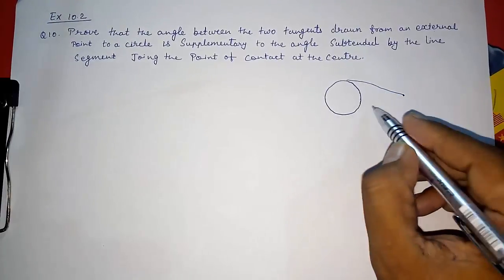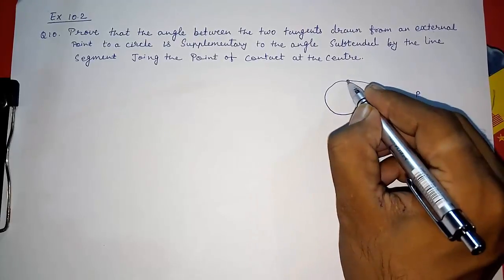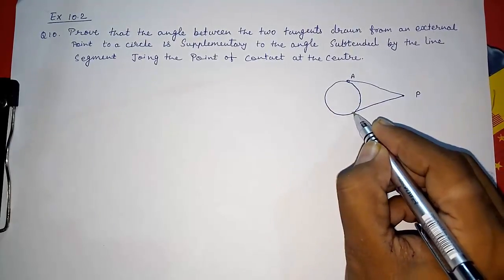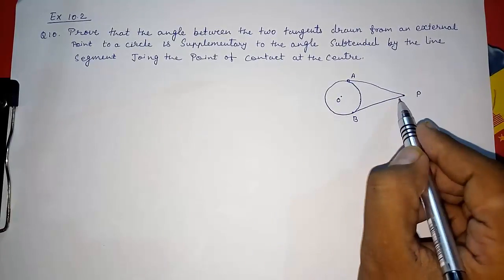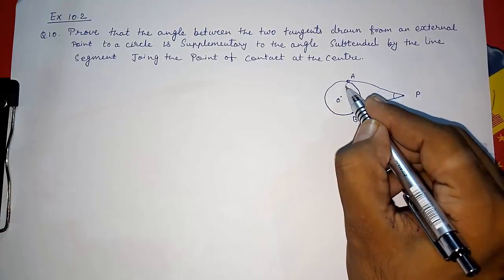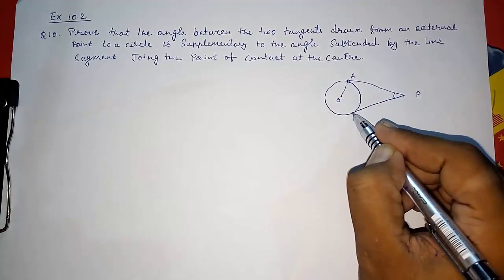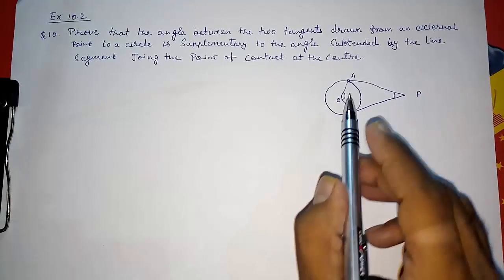...they are telling that this angle is supplementary to the angle formed on the center with the radius. So we have to prove that these two are supplementary.